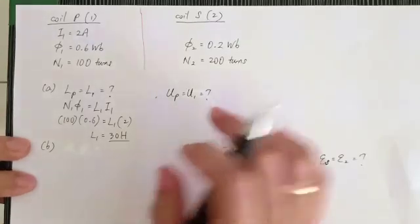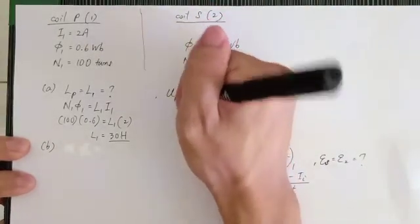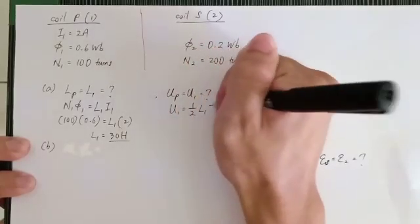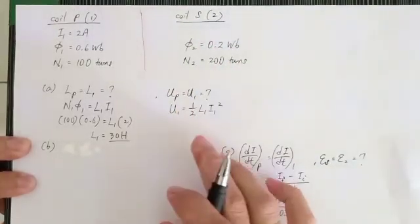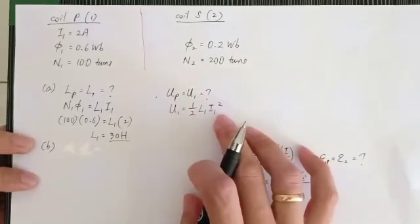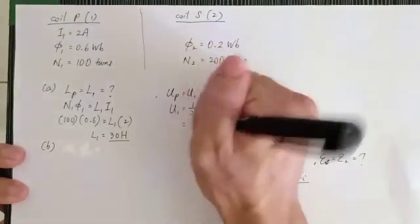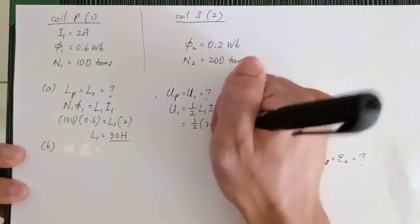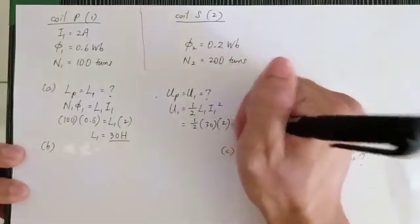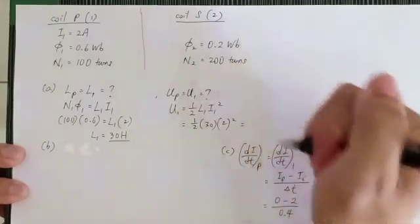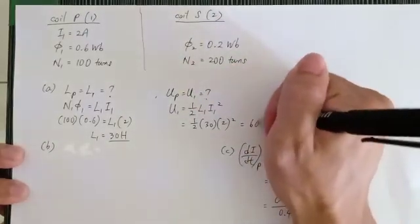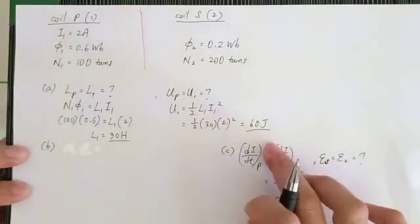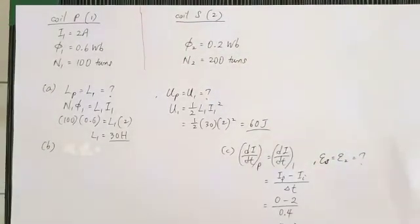Next, to find the energy stored in coil one, we use the formula U1 = ½·L1·I1². Substituting: L1 is 30 henries and I1 is 2 amperes squared. The answer is 60 joules.